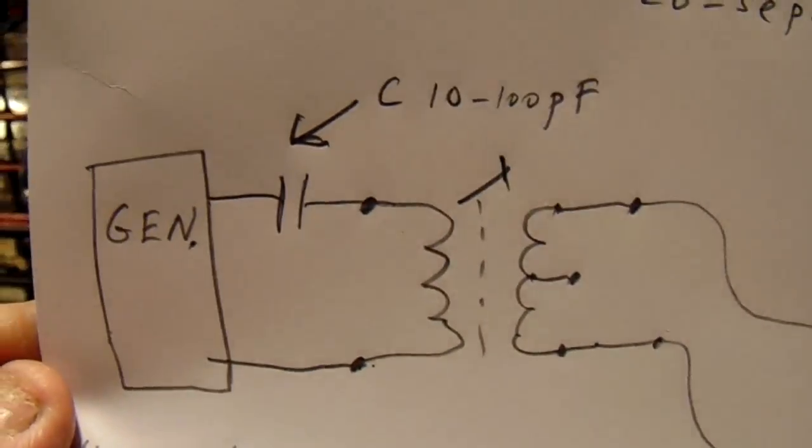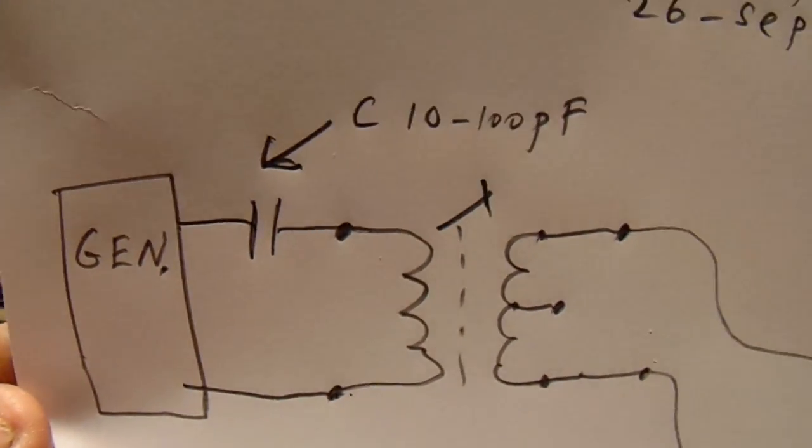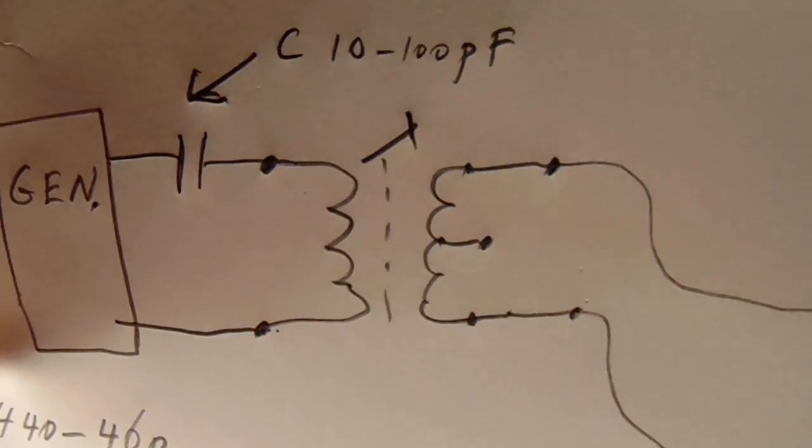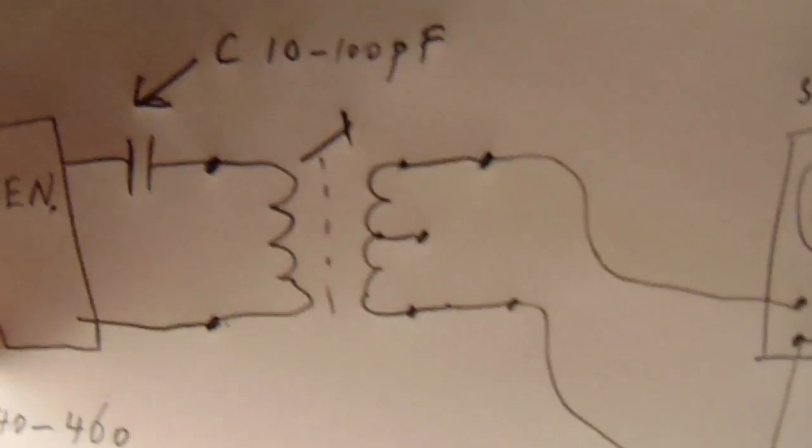There is a coupling cap. You have to decide that for yourself to couple the IF filter loosely to the generator, and at the secondary from the generator we connect our scope.